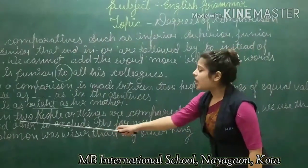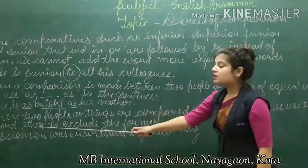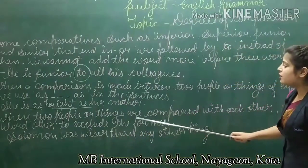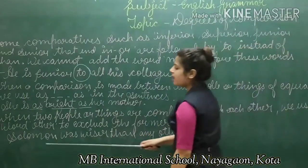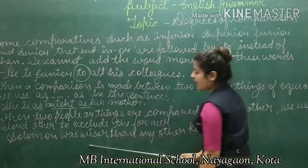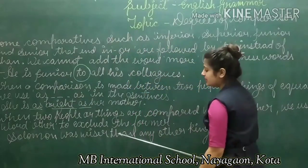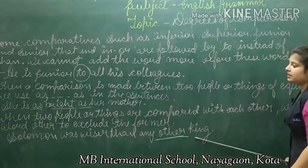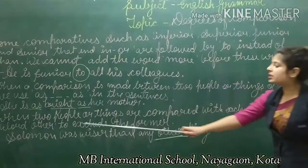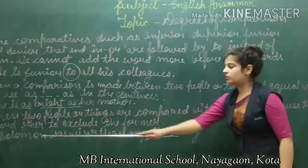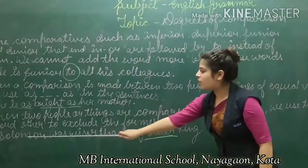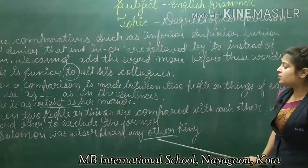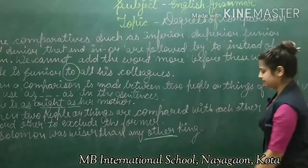Next, when two people or things are compared with each other, we use the word 'other' to exclude the former. For example: Solomon was wiser than any other king. We are excluding the former in this sentence, that's why we use the word 'other' here.